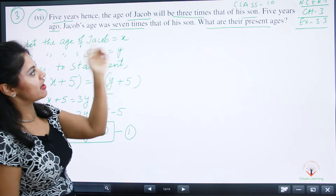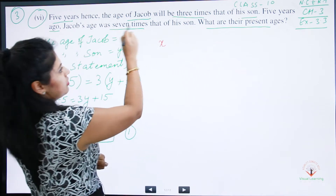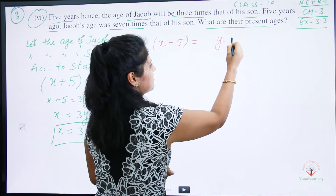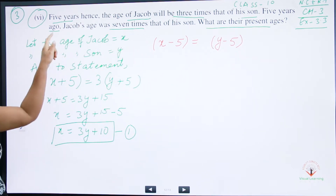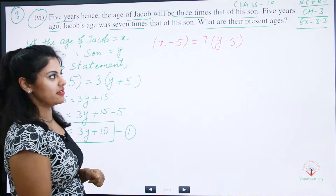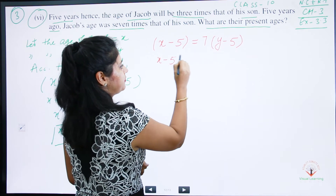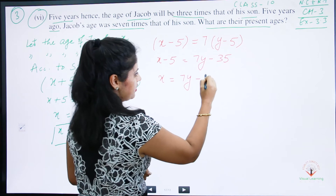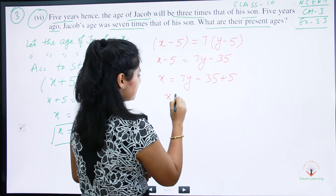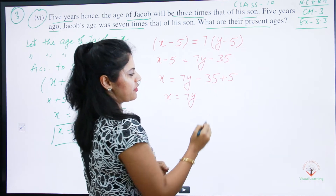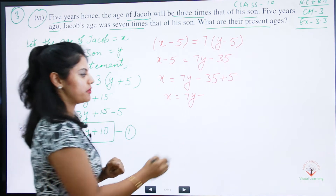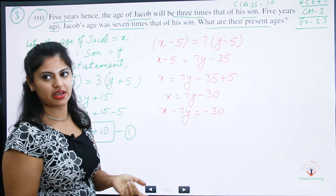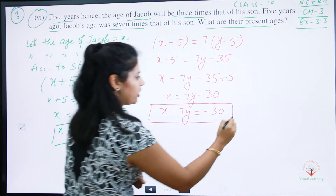The second condition: five years ago, Jacob's age was seven times his son's age. So x - 5 = 7(y - 5). Opening the bracket: x - 5 = 7y - 35. So x = 7y - 35 + 5, which gives x = 7y - 30. This is Equation Number 2.